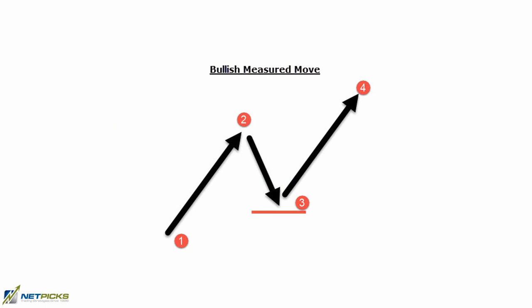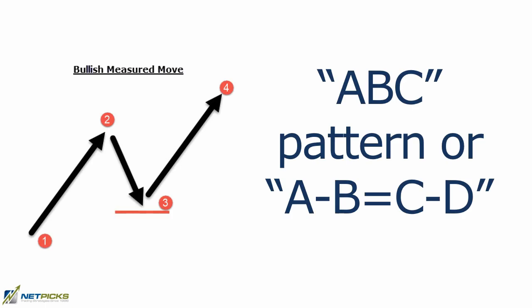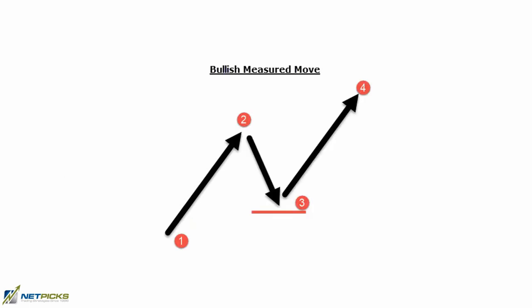Whatever your strategy is, it's a pretty good addition even if you just use it to judge the character of the market. Essentially it's a three-wave pattern of price where that third wave is close to the same distance as the first wave. You've heard it called the ABC pattern or the A-to-B equals C-to-D pattern. For a bullish setup: number one is the impulse move up, two is a corrective decline, three is where price bottoms and reverses, and four is the end of the move — where the move from one to two equals the move from three to four. It often resembles a price channel moving in symmetrical sequence.